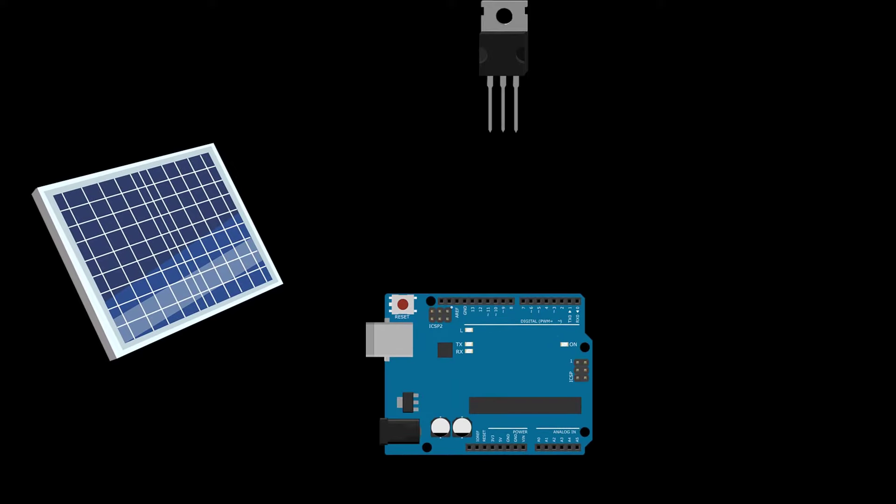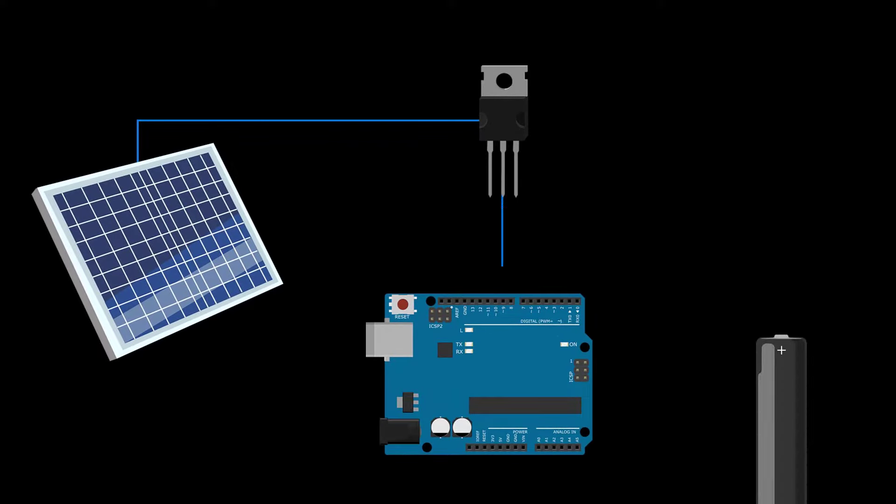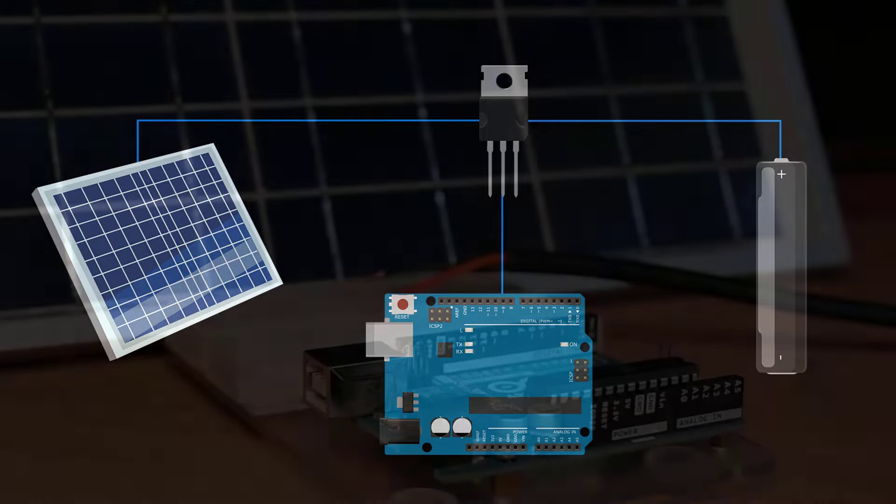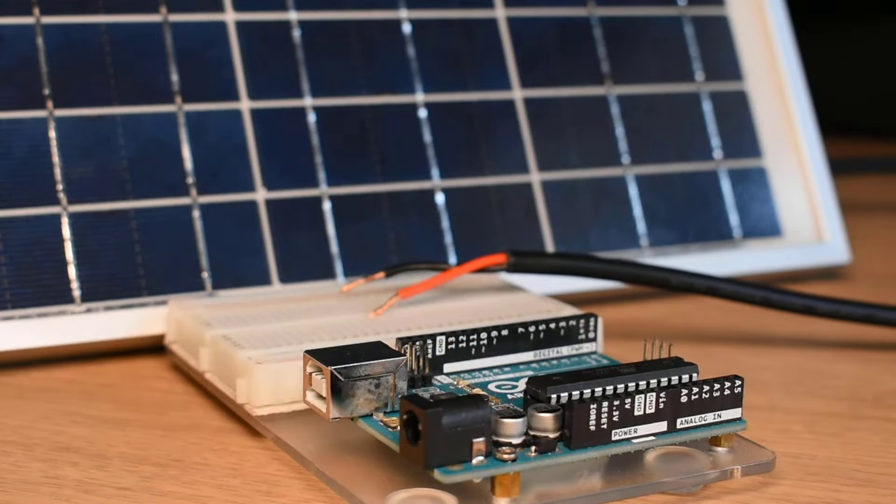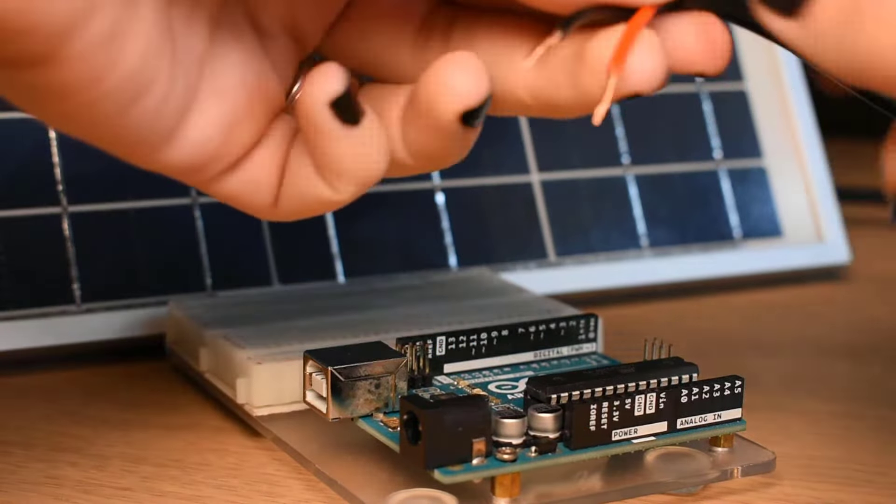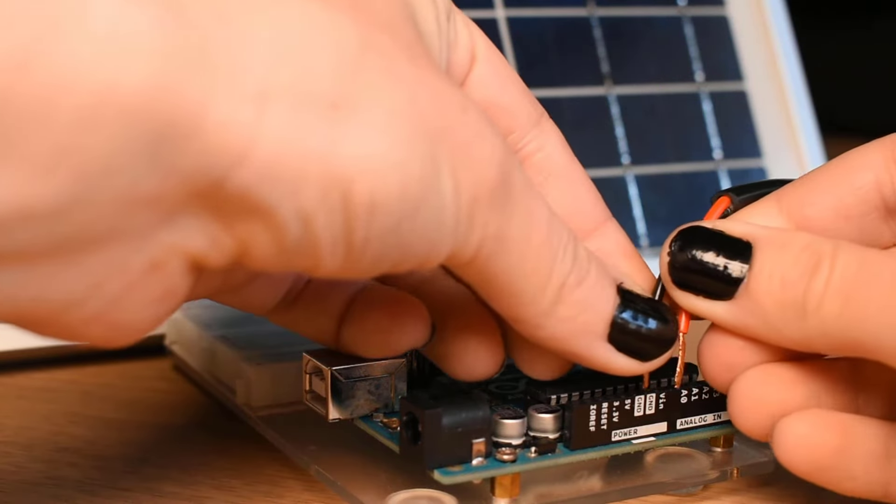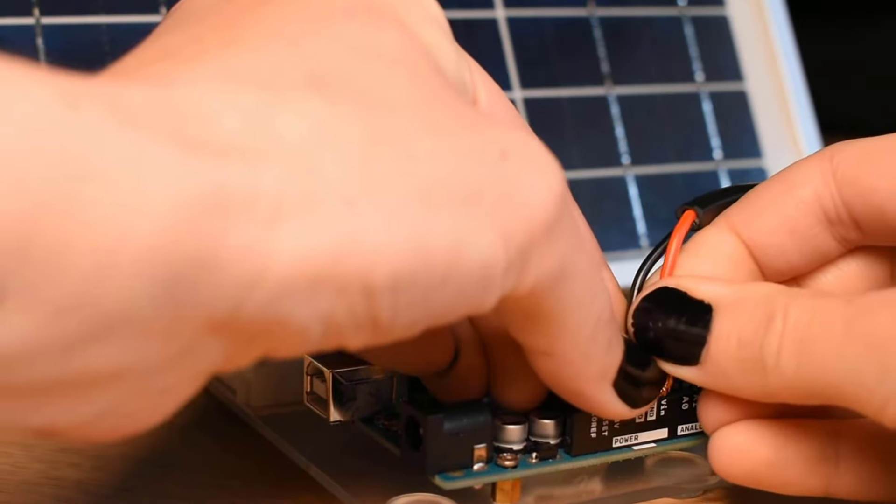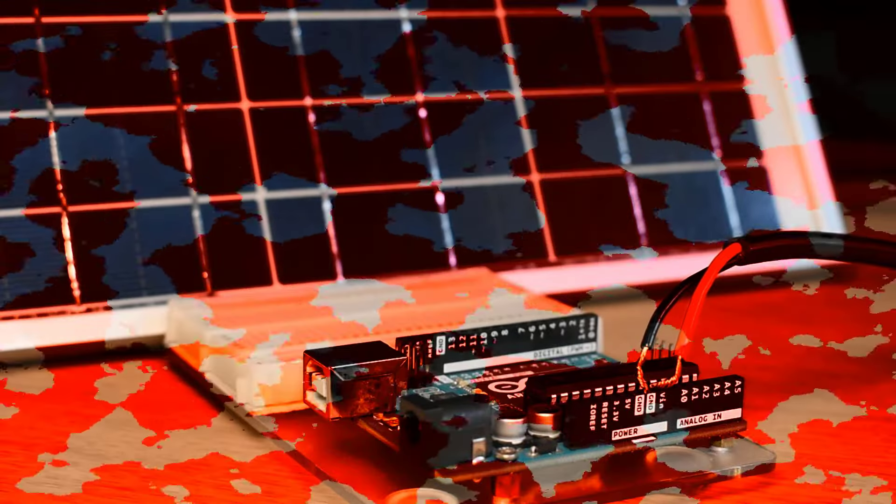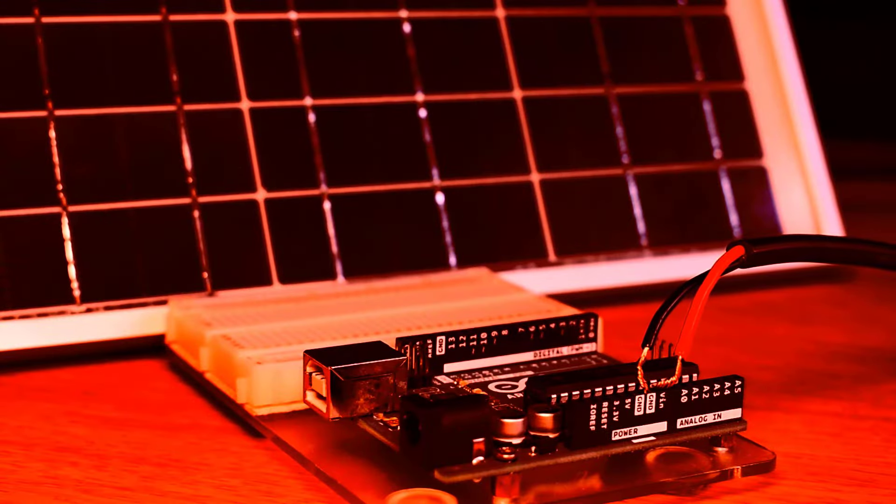In this video, you'll learn how to harness the power of the sun for your Arduino projects. You might think you can just wire the solar panel to the Arduino VIN and let the onboard voltage regulator do the work. It might work, but it might also fry the Arduino if the voltage is too high.